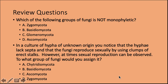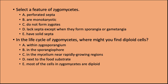Review questions: The group of fungi that is not monophyletic is A — Zygomycota. Hyphae that lack septa and reproduce asexually using clumps of erect stalks, with occasional sexual reproduction, would be assigned to D — Zygomycota. A feature of zygomycetes is D — they lack septa except when they form the sporangia or gametangia. In the life cycle of zygomycetes, diploid cells are found in A — within the zygosporangia.